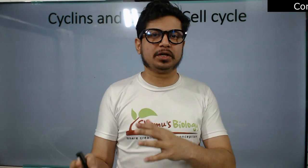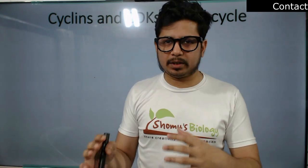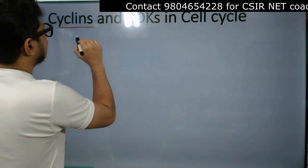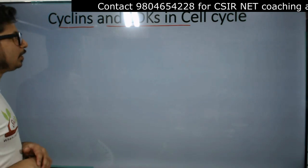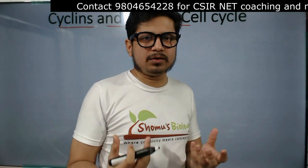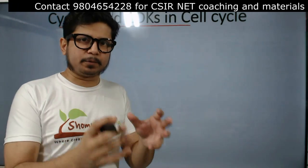Hello everyone, welcome to another video from Shomu's Biology. In this video lecture we are going to discuss about cyclins and CDKs and their role in the progression of the cell cycle. In this series of lectures we are talking about cell cycle and cell cycle regulation. To understand cell cycle regulation you need to know what is the cell cycle, what are the phases, what are the cell cycle checkpoints, and more importantly the role of cyclins and CDKs in the cell cycle progression. These are the essential enzymes which allow the cell to move from one phase of the cycle to the next phase by modifying specific proteins inside the cell.